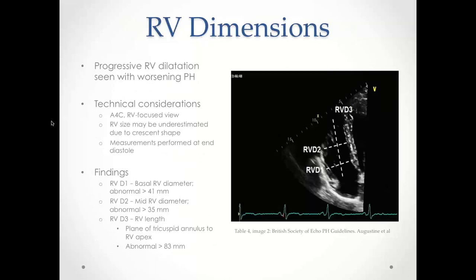RV dimensions worsen with progressive pulmonary hypertension. Measurements taken from an apical RV-focused view include: basal RV diameter (abnormal if over 41 mm), mid-RV diameter (abnormal if over 35 mm), and RV length from the tricuspid annulus to RV apex (abnormal if over 83 mm). It should be noted that this method doesn't account for the RVOT and likely results in underestimation of true RV size.